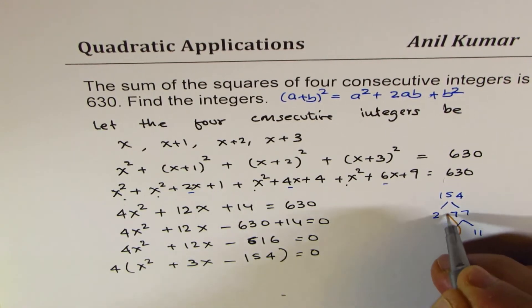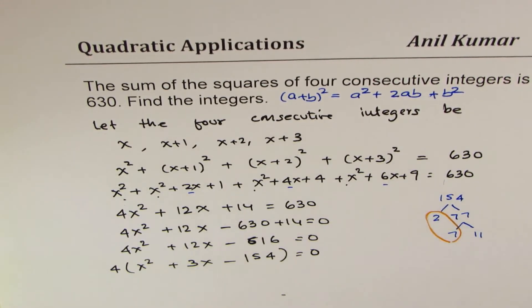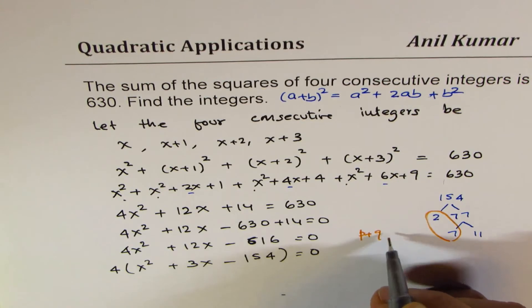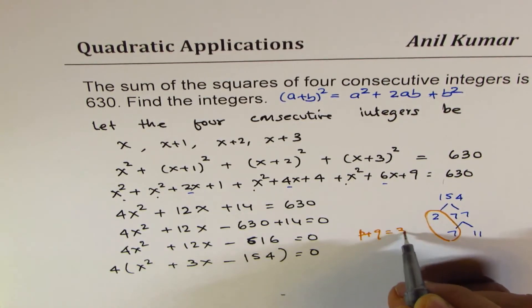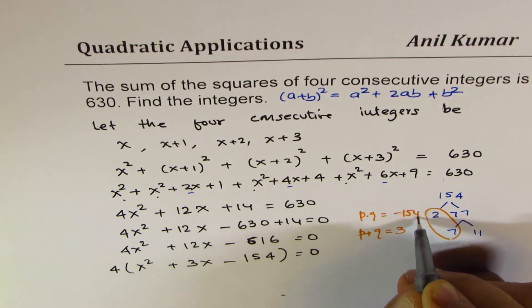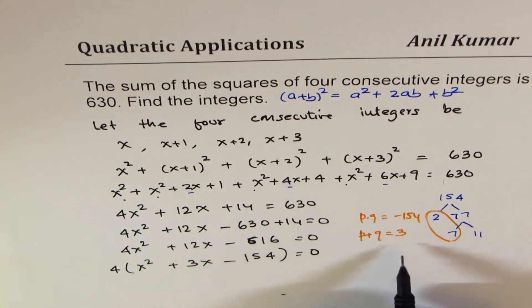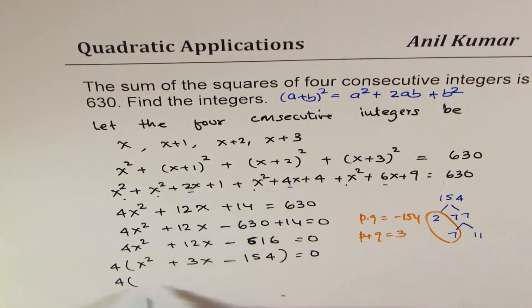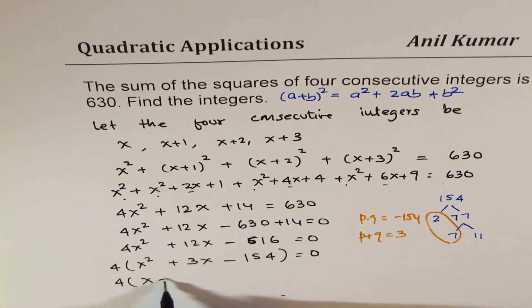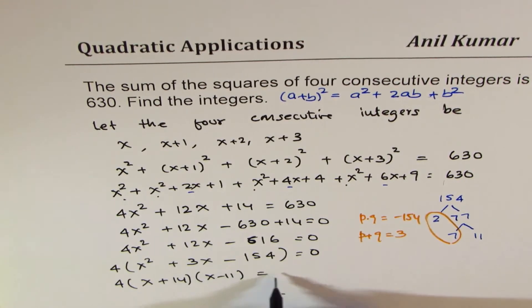So this is a good way of understanding how to pick 2 numbers so that we have their sum, that is p plus q as 3, and the product p times q as minus 154. So here you see the numbers are 11 and 14, 14 being positive. So x plus 14 times x minus 11 equals to 0.